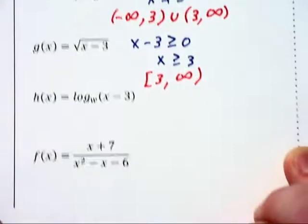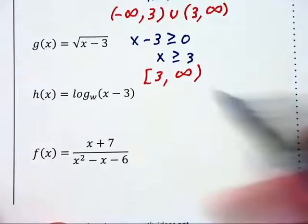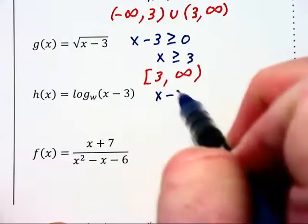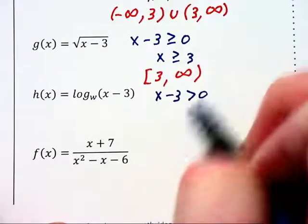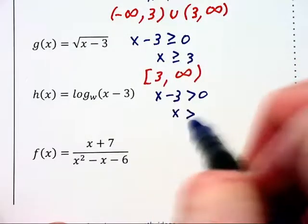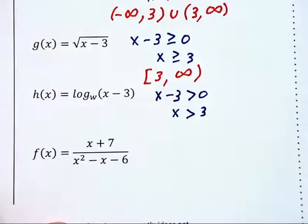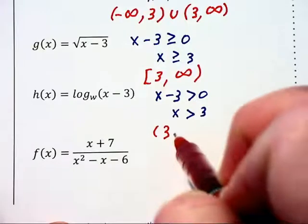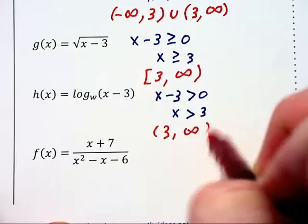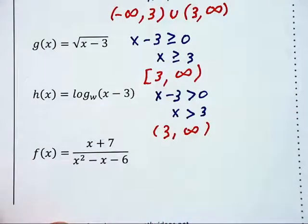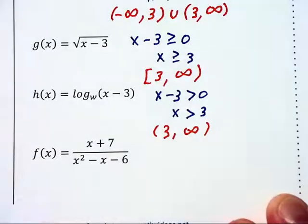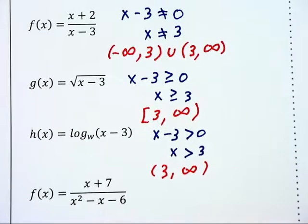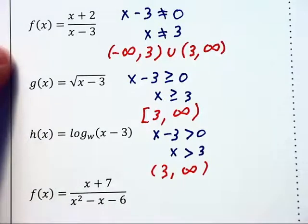In this third example, the argument of the logarithm must be positive. So x minus 3 must be greater than 0. Therefore, x is greater than 3. And the domain would be listed as the interval from 3 to infinity where we do not include the 3 at the initial left-hand endpoint.